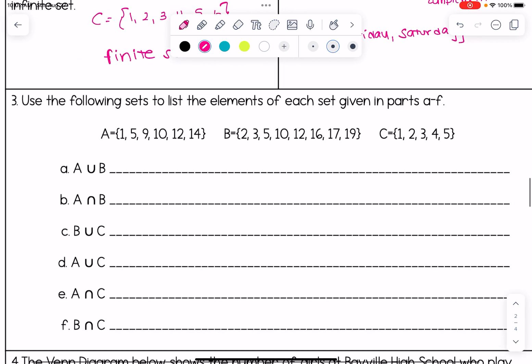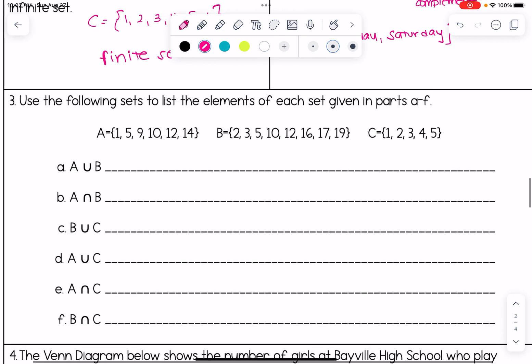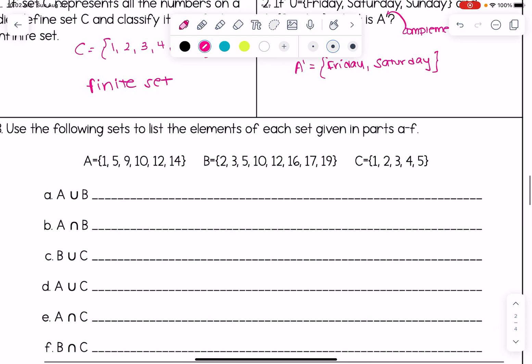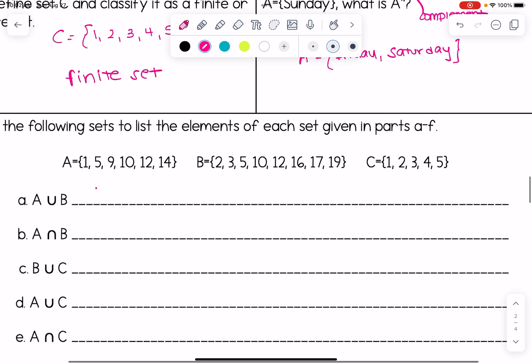For number three we have a big question here. It says use the following sets to list the elements of each set given in parts A through F. All right for A we have A union B, right, so this means A or B. Remember we talked about how that is the union symbol which goes with the letter or the word or. So this combines and unites all of the elements of A and B.